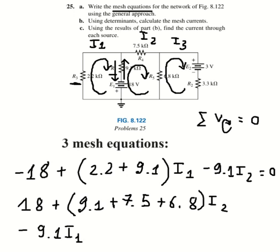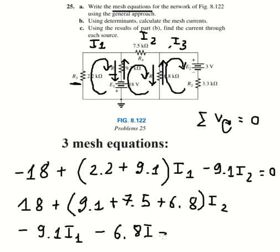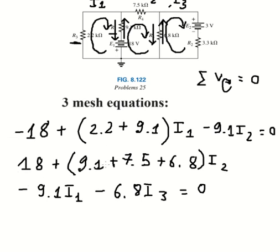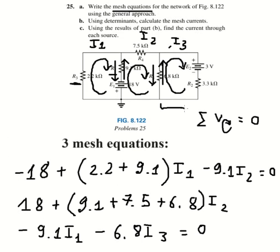And in this location we have another current. I number three is in the opposite direction, so we need to subtract 6.8 times I number three. That gives us the second mesh equation. The last equation comes from the third mesh.